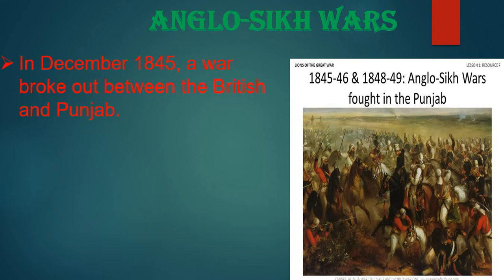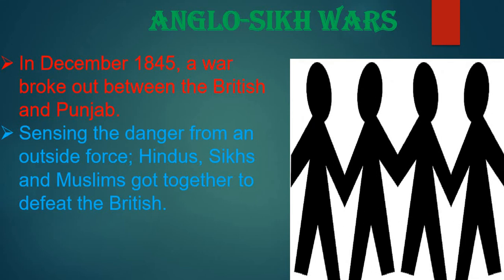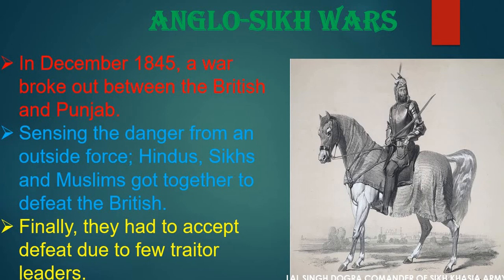Sensing the danger from an outside force, not only Sikhs but also Hindus and Muslims all came together to fight the British — see the picture, students. It shows the love and friendship that people of other religions also had towards the Sikhs. However, finally they had to accept defeat due to a few traitor leaders. Just like what happened to Sirajud Daula in the Battle of Plassey, where his own military leader became a traitor, here too there were cheaters because of whom they had to accept defeat.